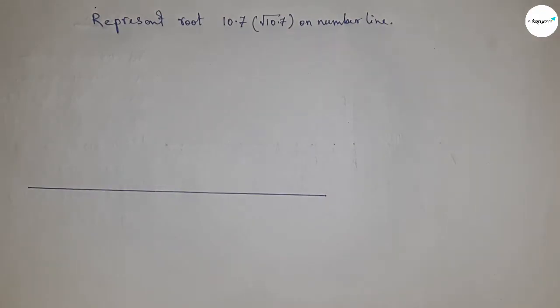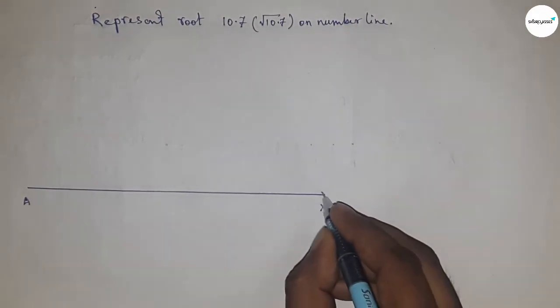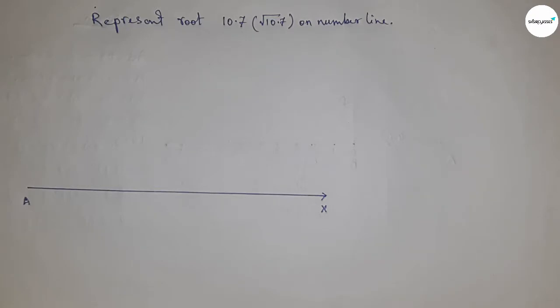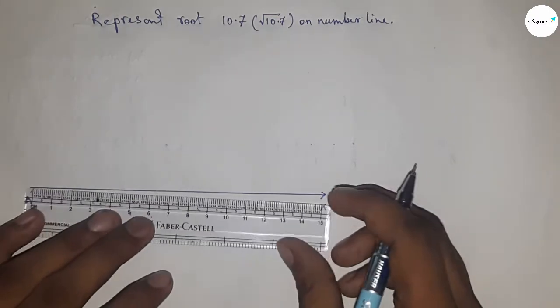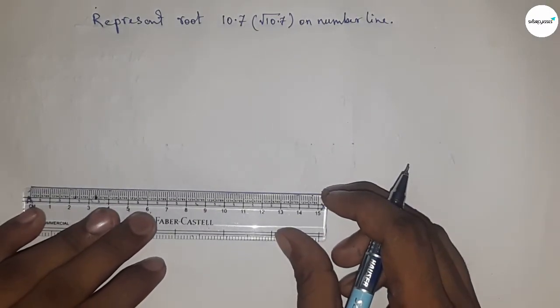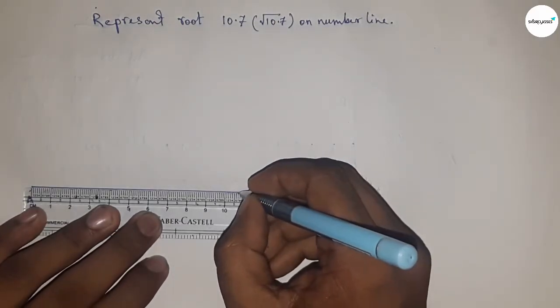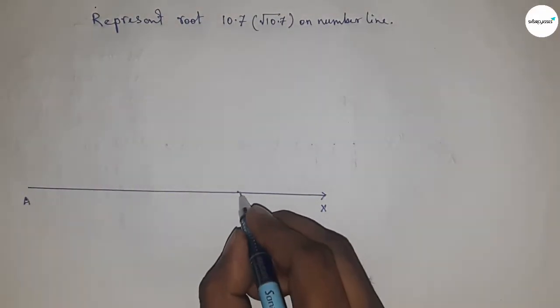First of all, drawing a line of any length and this is AX line. Next, taking 10.7 centimeter by using scale, so this is 10.7 centimeter.